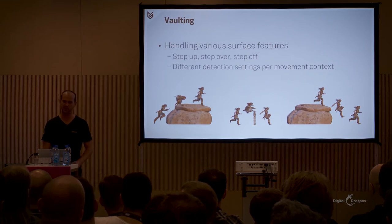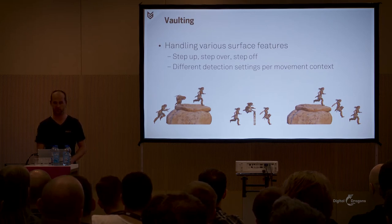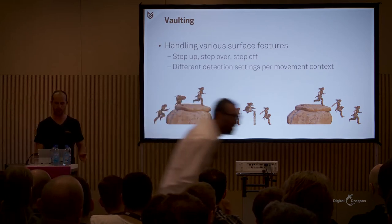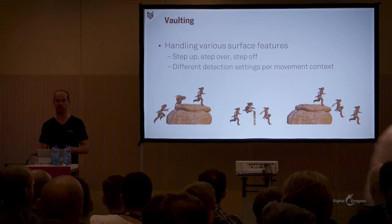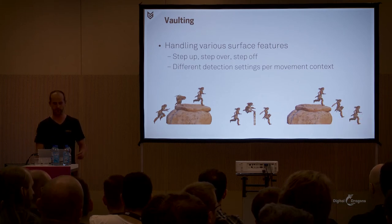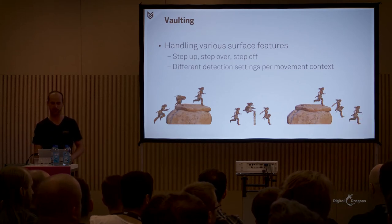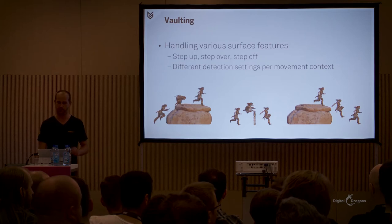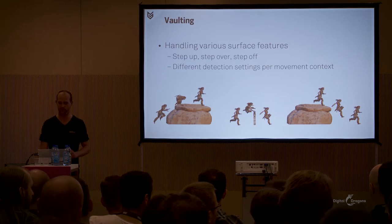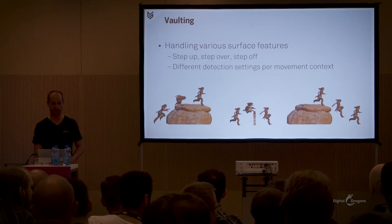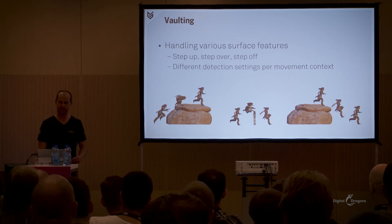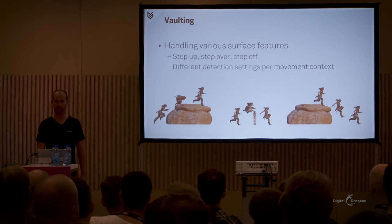Our Vault System is capable of performing three types of moves: step up, step over, and step off. The detection distances and parameters used are dependent on the current type of movement. For example, swimming or sprinting have different detection settings compared to normal walking.